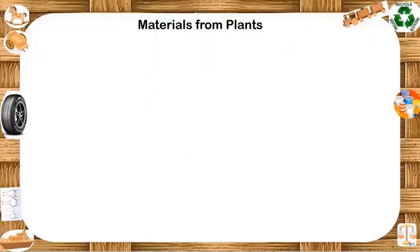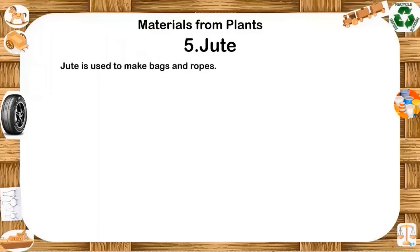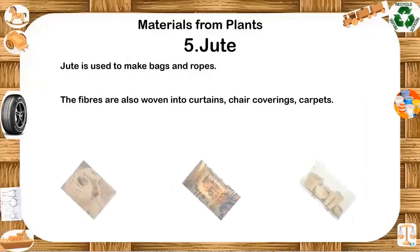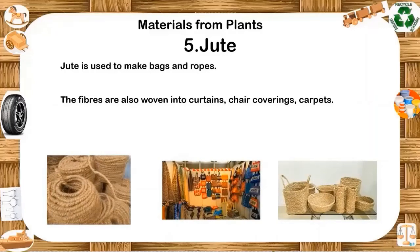Jute. We get jute from the jute plant. Jute is used to make bags and ropes. The fibers are also woven into curtains, chair coverings and carpet. The fibers are used alone or blended with other types of fibers to make twine and rope. It is very rough and very difficult to cut or tear jute. Jute is an eco-friendly and biodegradable natural product with no adverse effect on the environment.